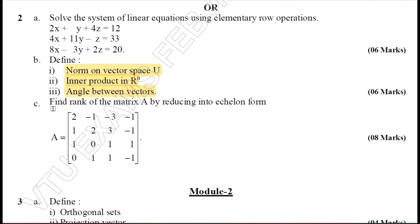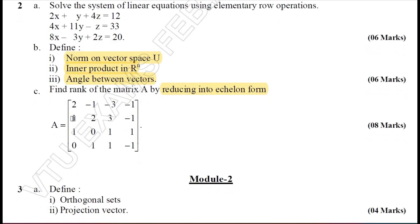Moving on to Question 2C: you are required to find the rank of the given matrix A. To find the rank, you should use row reduced echelon form. All the leading entries should be 1, and below each leading entry should be 0. That is the aim when solving for the rank of the given matrix.